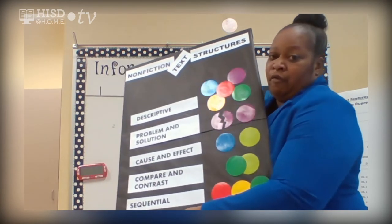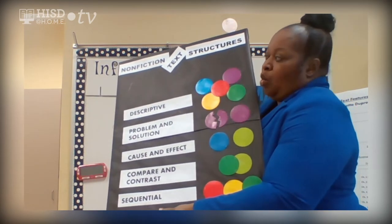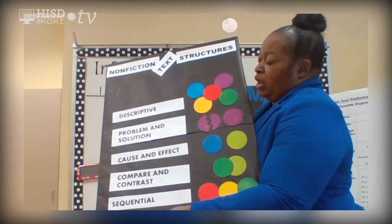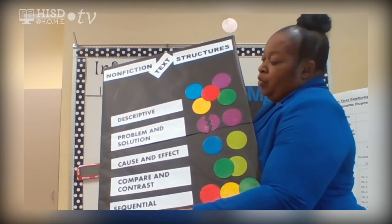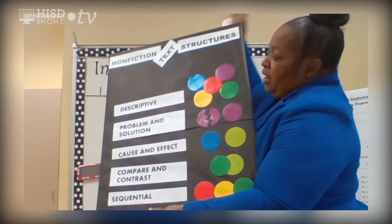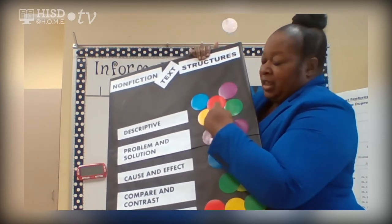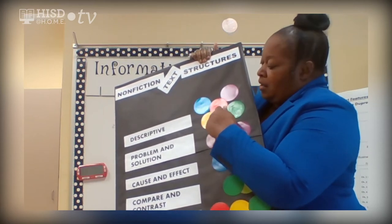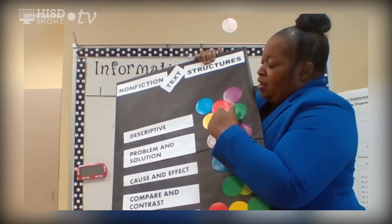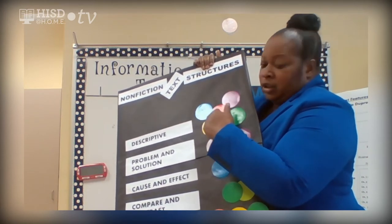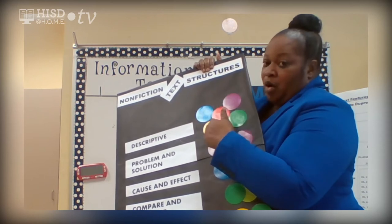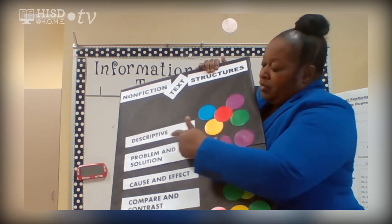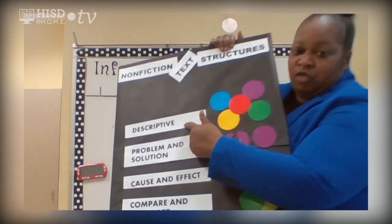Descriptive. With a descriptive text structure, the author would include a central idea or a main topic, and then have supporting details to support the main topic. That is descriptive.